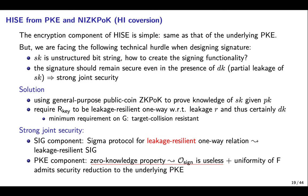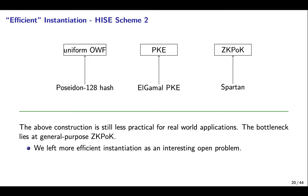The security of the signature component is implied by the Sigma protocol for a leakage-resilient one-way function. The security of the public encryption component is based on the fact that the additional signing oracle is useless, and the uniformity of F admits a security reduction to the underlying public encryption. As to instantiation, we can choose Poseidon hash to realize the uniform one-way function, choose ElGamal encryption to realize public key encryption, and choose SPARTAN to realize ZK-POK.